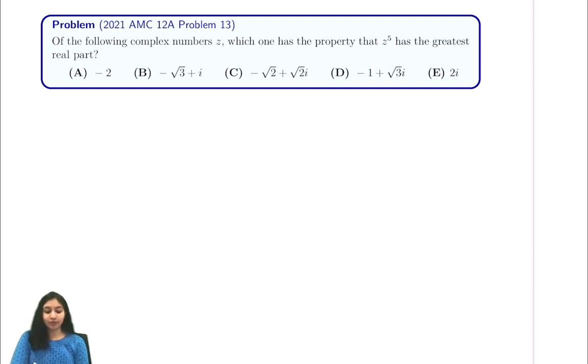If you don't know, the magnitude which is r is just the square root of a squared plus b squared, where z is a plus bi.